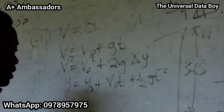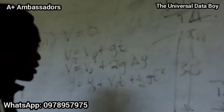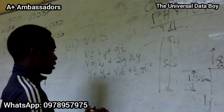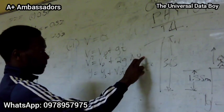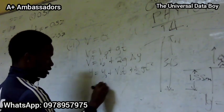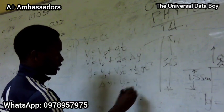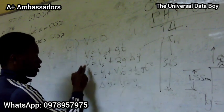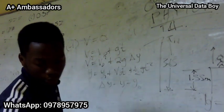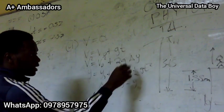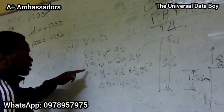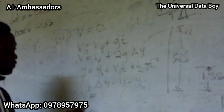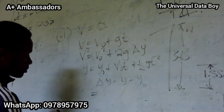We don't have time, so we cannot use the first or third equations. We use V squared equals V naught squared plus 2G times change in Y. The final velocity is zero, so we set V squared to zero. Gravity is negative 9.8 since we take up as positive, and change in Y is Y minus Y naught.